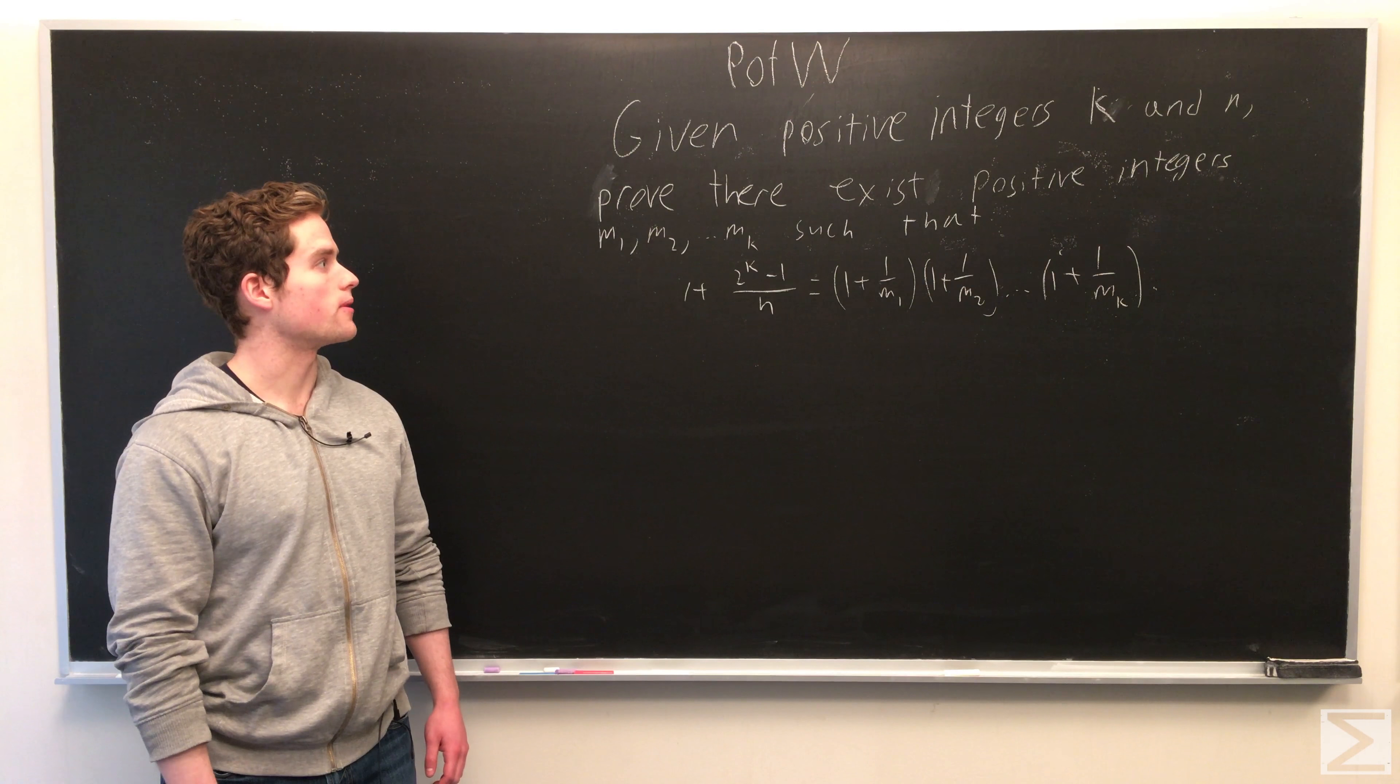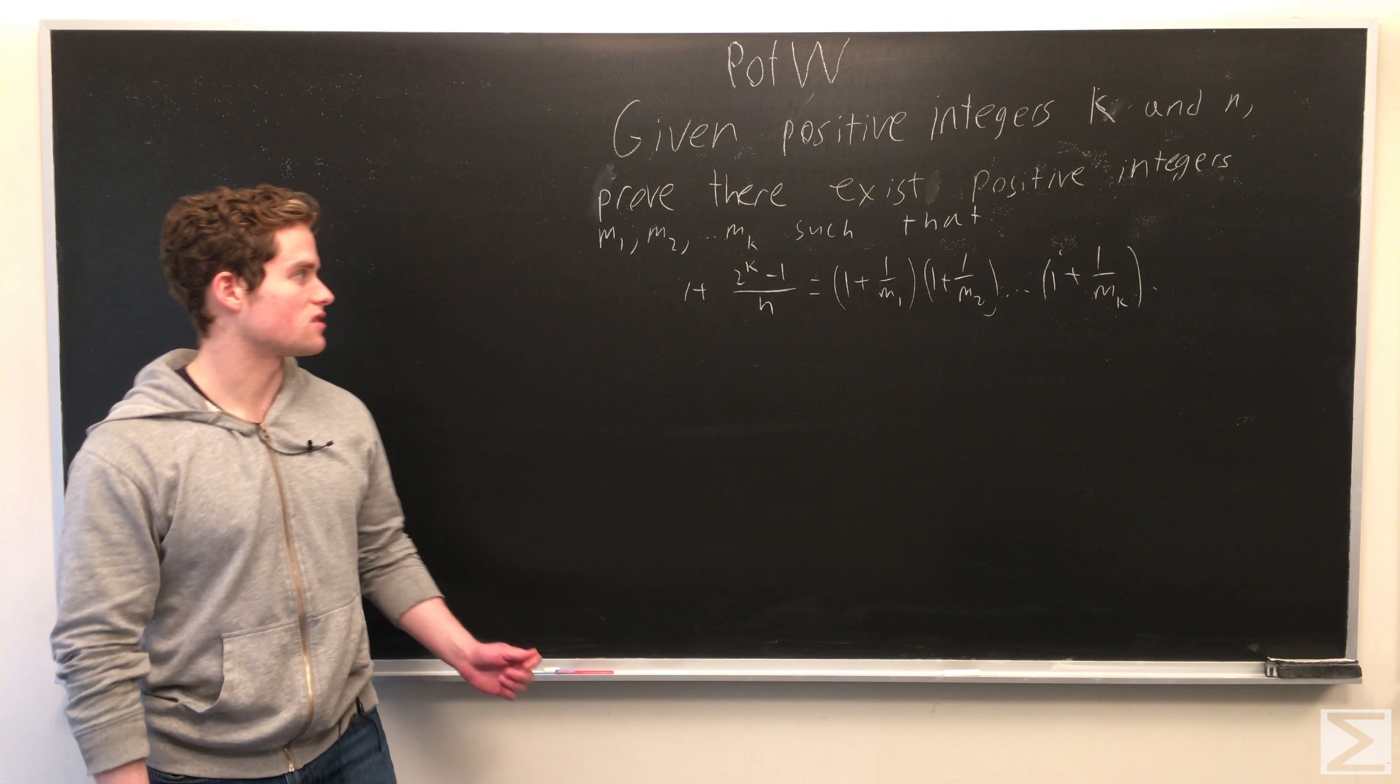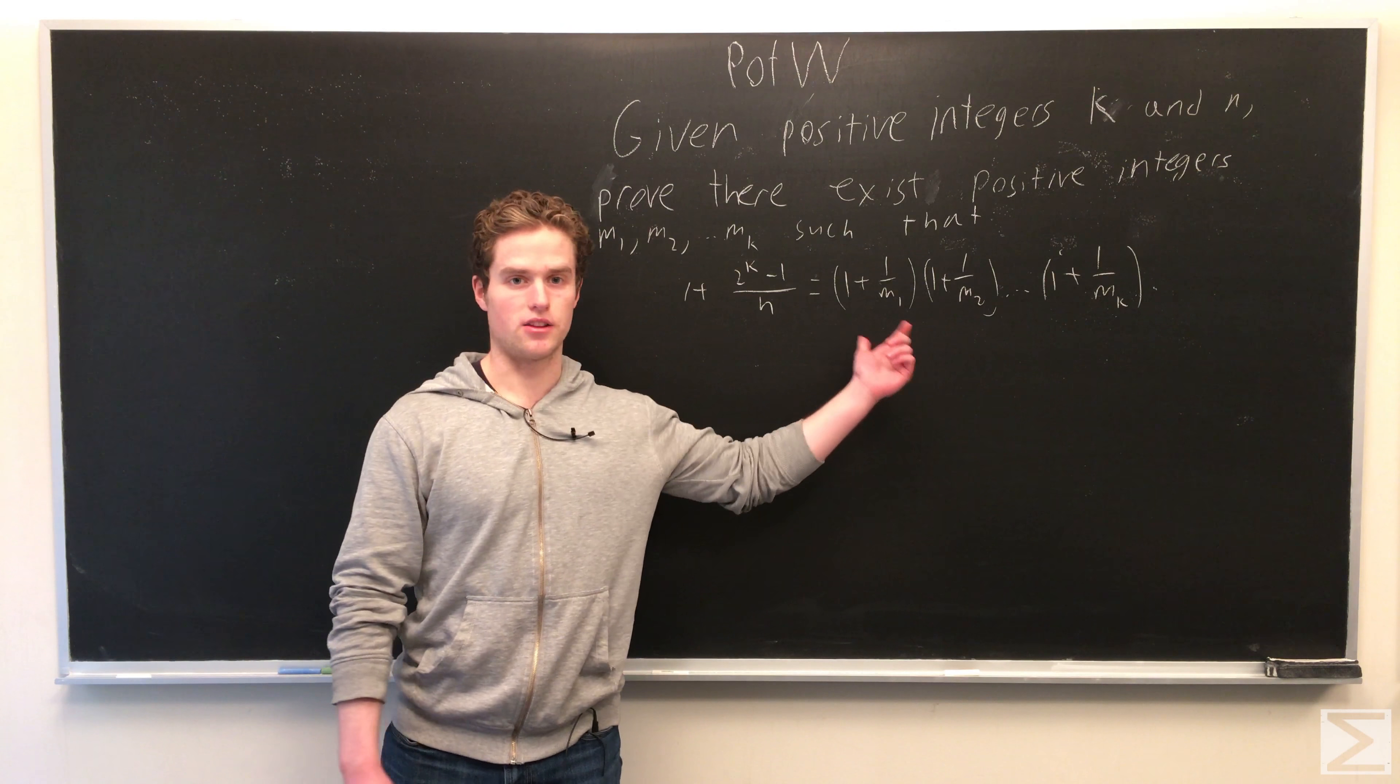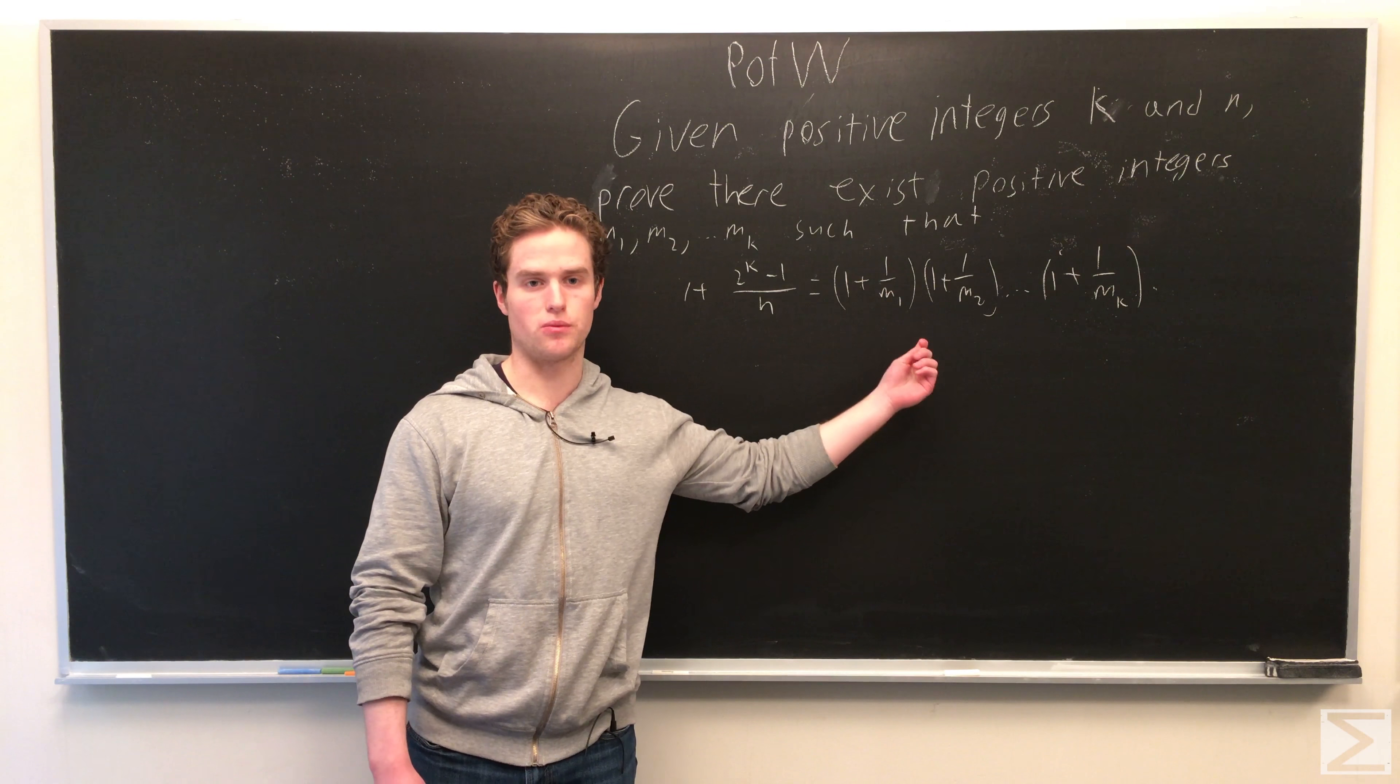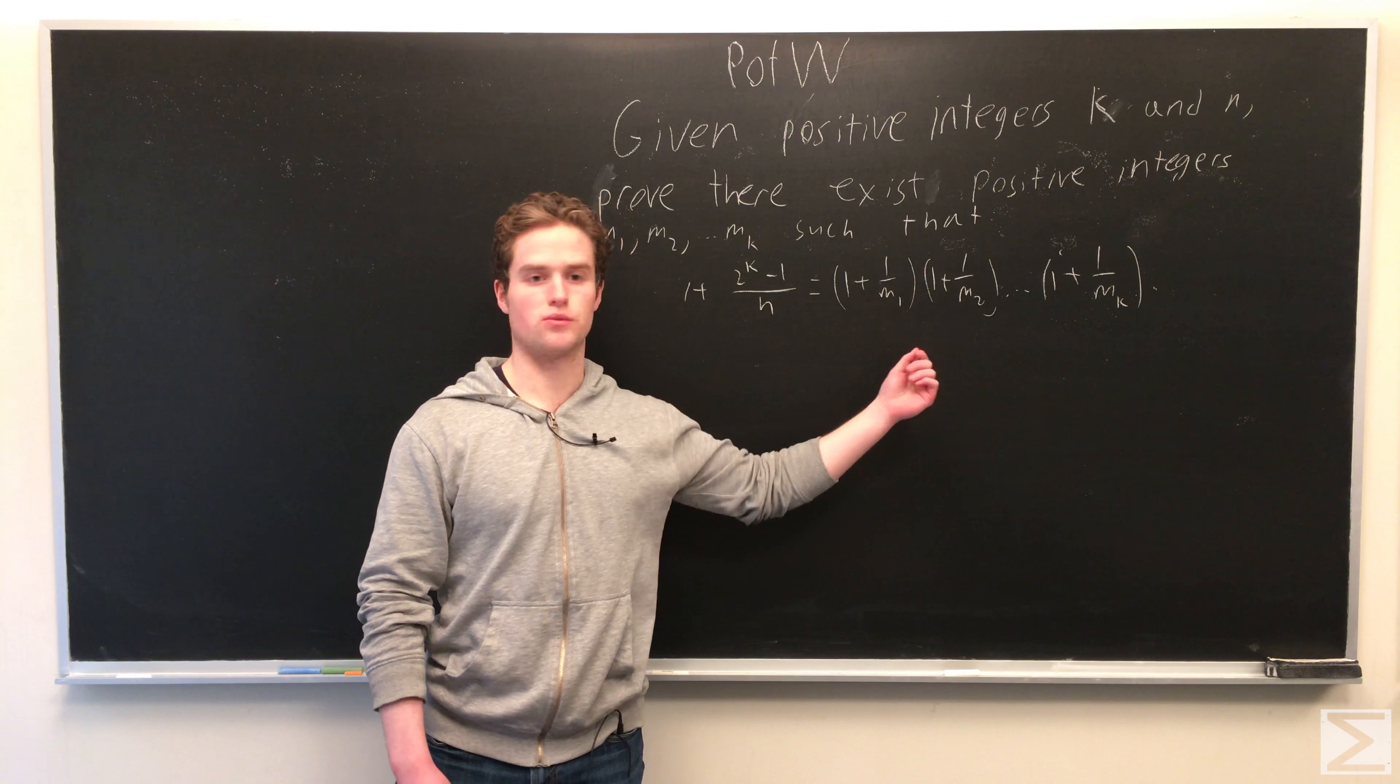we're given positive integers k and n, and we want to prove we can find positive integers m1, m2, up to mk, such that 1 plus 2 to the k minus 1 over n equals this product of fractions: 1 plus 1 over m1 times 1 plus 1 over m2, dot dot dot, until 1 plus 1 over mk.